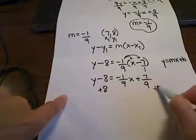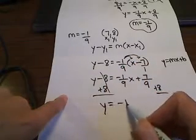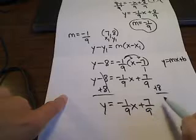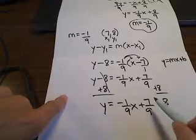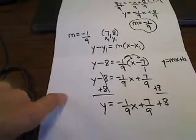So I'm going to add the 8 to both sides here. So I have y equals negative 1/9th x plus 7/9th and then plus the 8. Alright, now I need to collect like terms. These two right here, the 7/9th and the 8, are like terms. So I need to get a common denominator.